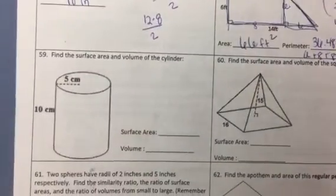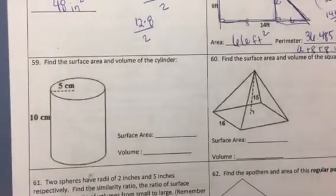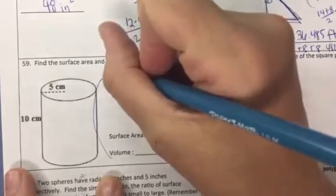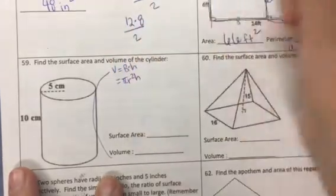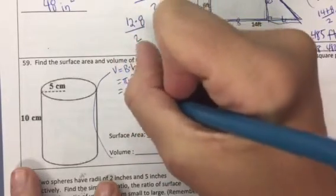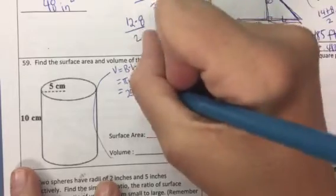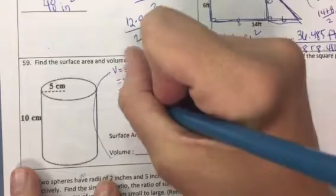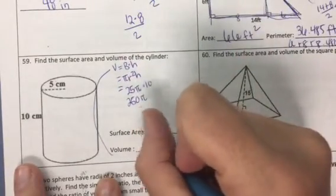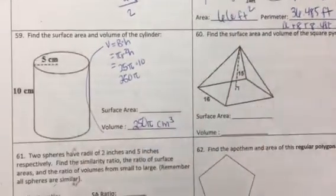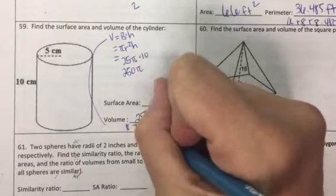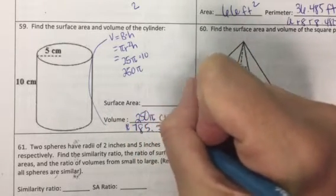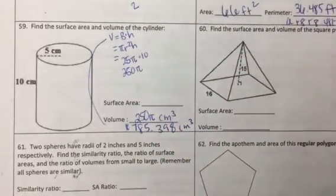Problem 59, surface area and volume. So we can generalize the volume of any prism or cylinder as the area of the base times the height. And since this is a cylinder, the area of its base is pi r squared. So we can use pi r squared h. So the radius squared is 25. So that's like 25 pi times the height of 10. That's going to be 250 pi, in cubic centimeters. And if we multiply that by pi, that's approximately 785.398 centimeters cubed.